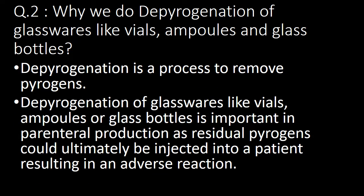Second basic question: why do we do depyrogenation of glassware like vials, ampoules and glass bottles? Depyrogenation process is a process to remove pyrogens. Depyrogenation of glassware like vials, ampoules and glass bottles is important in parenteral production as residual pyrogens could ultimately be injected into the patient resulting in an adverse reaction.